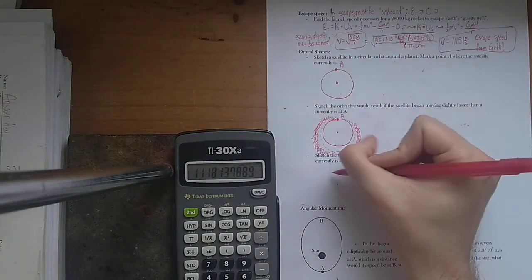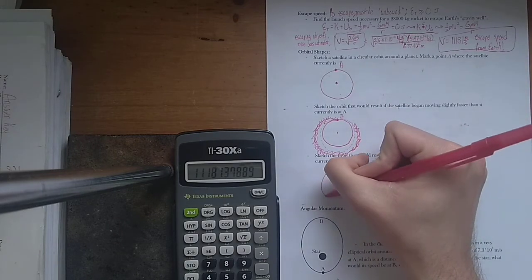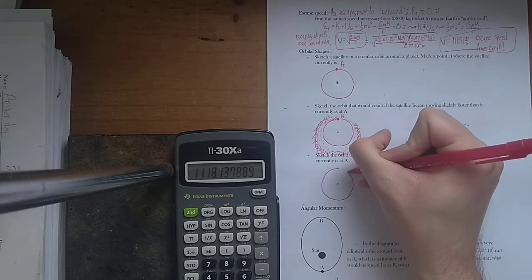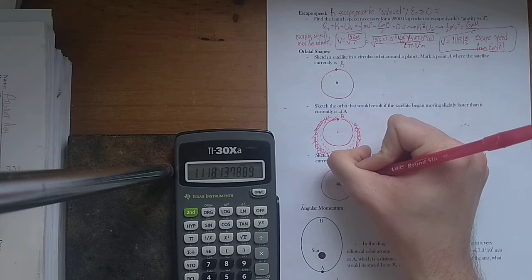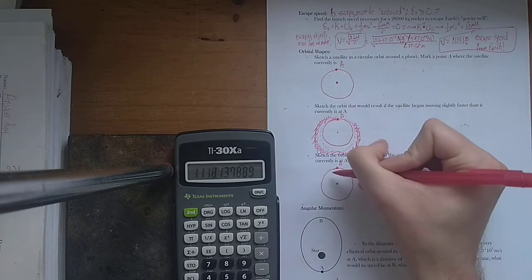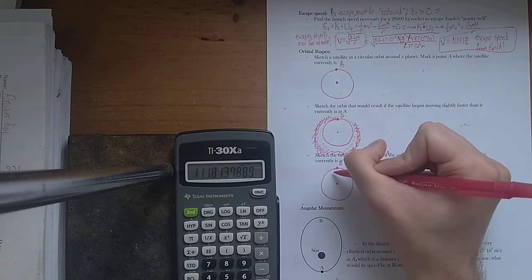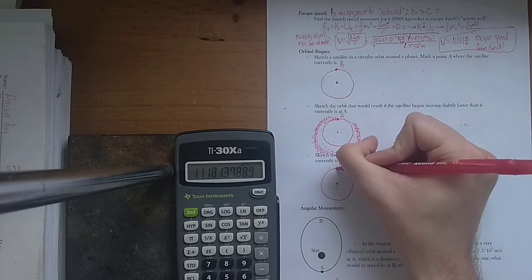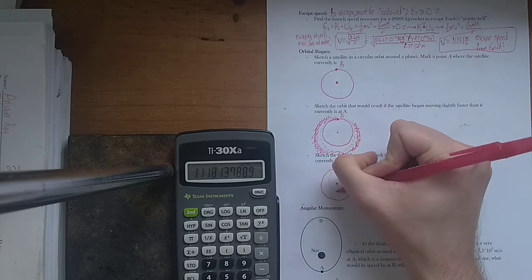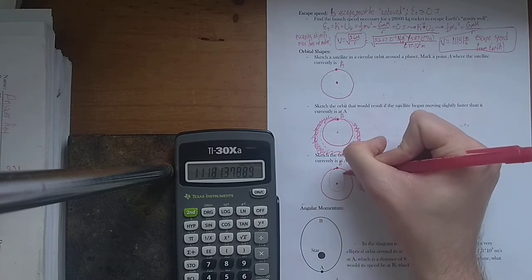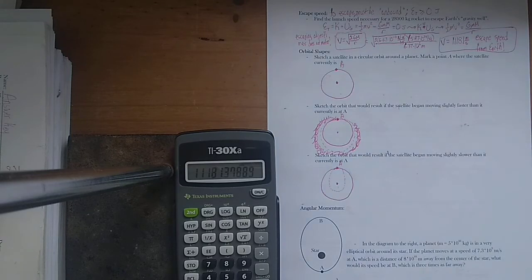The reverse happens if you start moving slower at that point. So, here's the planet. Here's A. Imagine you start moving slower at this point than you meant to. If you start moving slower, then you're going to get pulled in towards the planet more. So, your orbit will look more like this. Again, elliptical. But, there are ways to change the orbit shape. There are ways to change the orbit shape by moving slower or faster at a certain point.